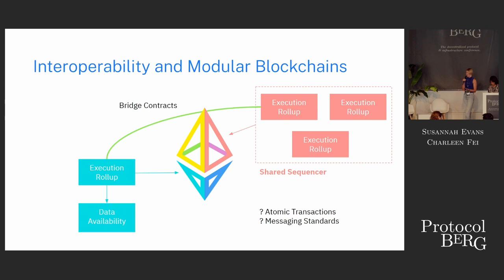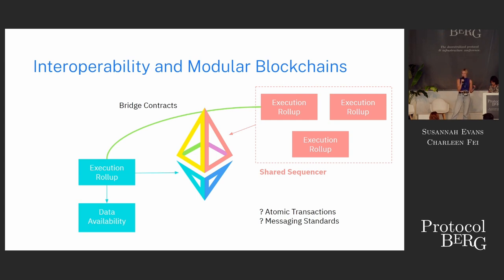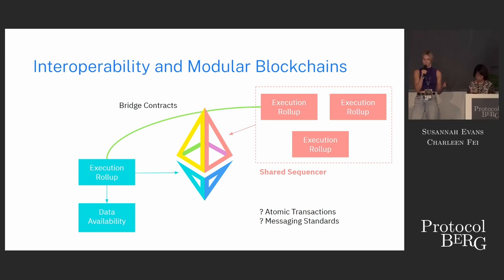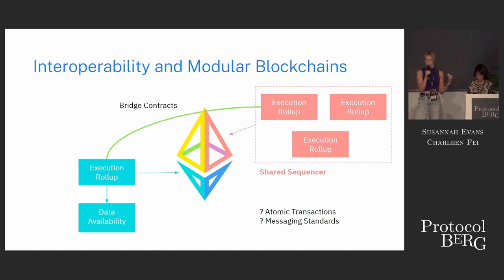With the modular blockchain paradigm, we have lots of different execution rollups. Some of them are using Ethereum for data availability, some of them aren't. All of these execution rollups somehow need to communicate with each other. The solutions currently being used involve different bridging solutions, deploying contracts on all of these rollups, having some way for them to communicate. Or you bundle lots of different rollups together and they all use the same shared sequencer or sequencer network.